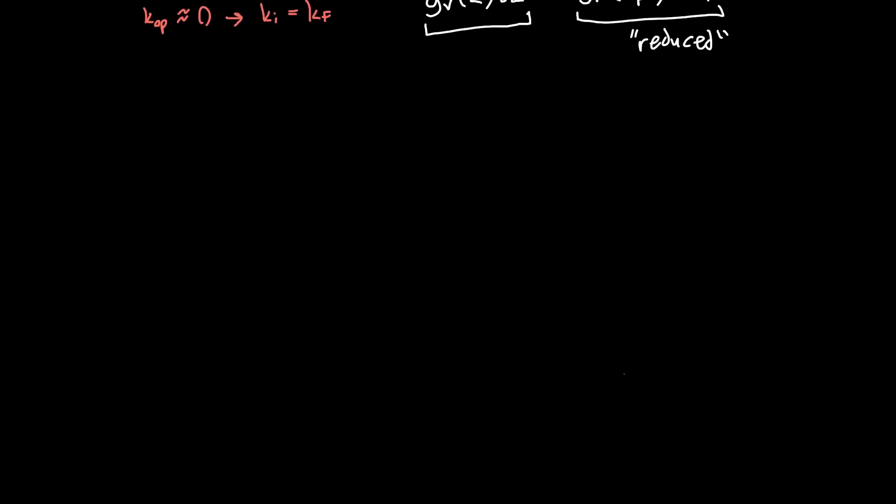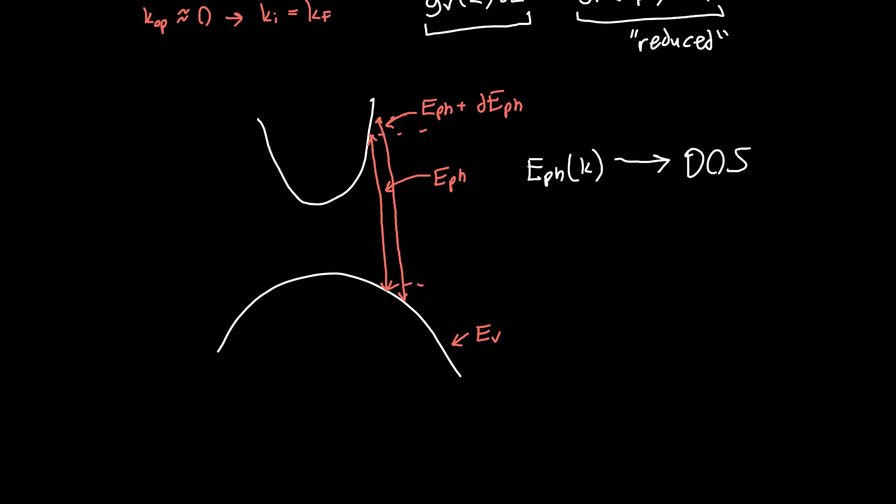So if we just redraw our band structure below, we see that if we've got a certain photon energy, and we're interested in the number of available states near that photon energy, we increase our photon energy by just a little bit. So this was our photon energy E photon, and this is our photon energy E photon plus dE photon. Now all we need to do is figure out an expression for E photon as a function of momentum, and we can play all of our old tricks with the density of states.